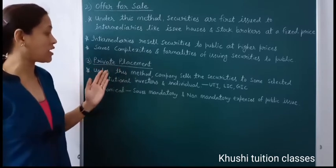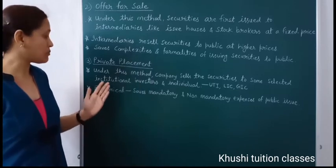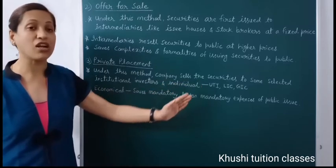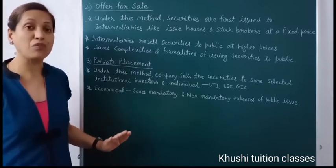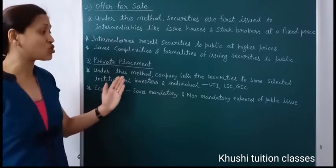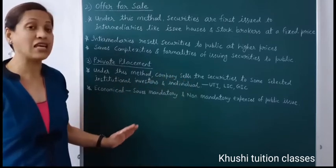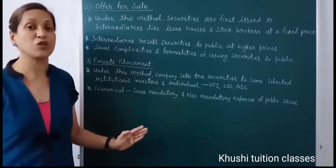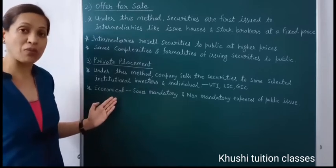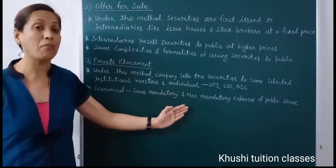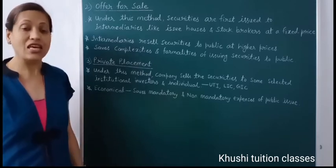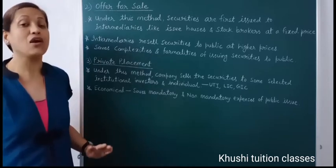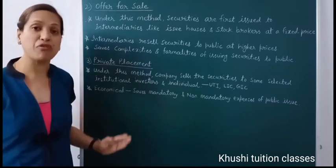The third method is private placement. Under this method, companies sell the securities to some selected institutional investors and individuals like Unit Trust of India, Life Insurance Corporation, and General Insurance Corporation. The company sells its securities or a major portion to selected institutional investors or individuals who want to purchase large amounts of stock. It is a very economical method because it saves the mandatory and non-mandatory expenses of a public issue. Companies whose financial position is not strong, or those that want to minimize costs, prefer private placement over a public issue.